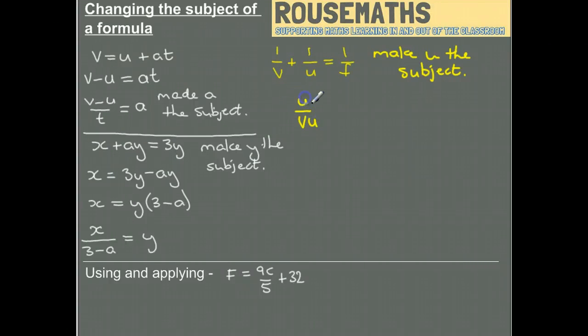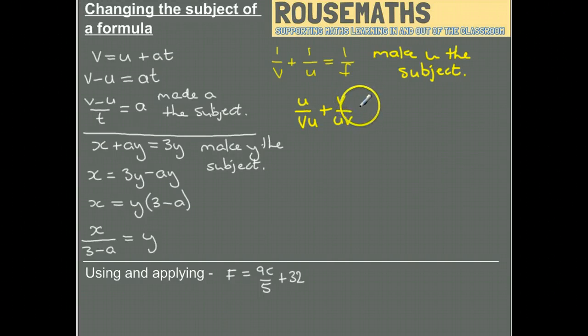So I've now got a common denominator. This one's vu, this one's uv, but they're the same thing because two things multiply together, it doesn't matter which order you do them.